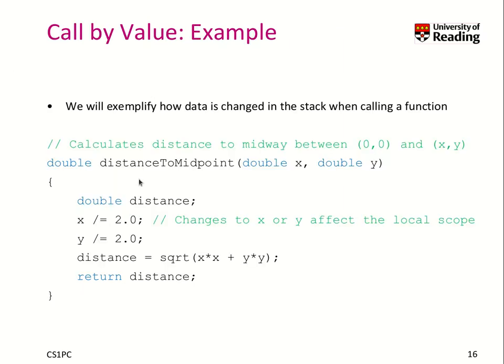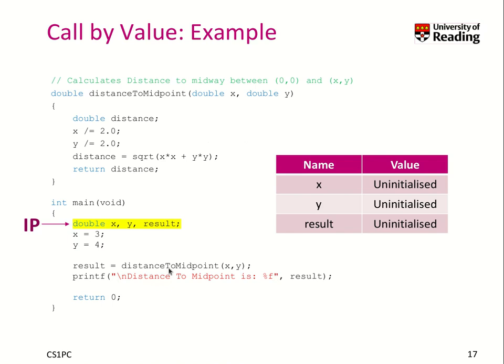Here's an example. We see a function that returns a double value, and it computes the distance to a midpoint based on two positions, x and y. It's a 2D function that returns the Euclidean distance to the midpoint, which is at location 0, 0. That's all what it does. Now let's look at how to use such a function.